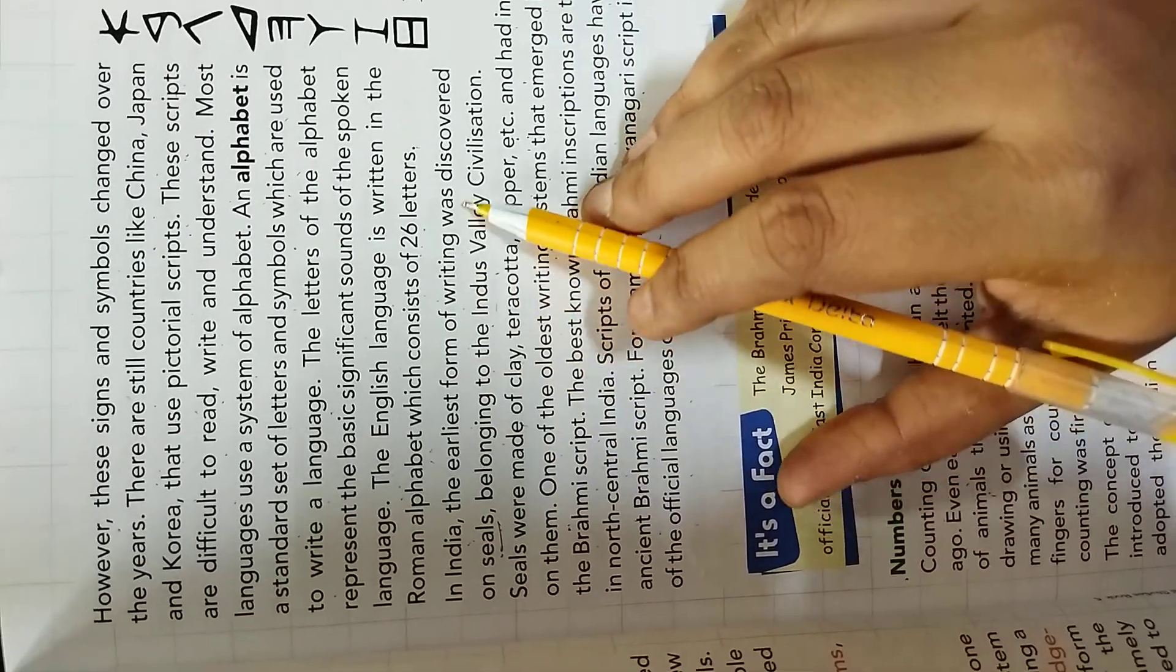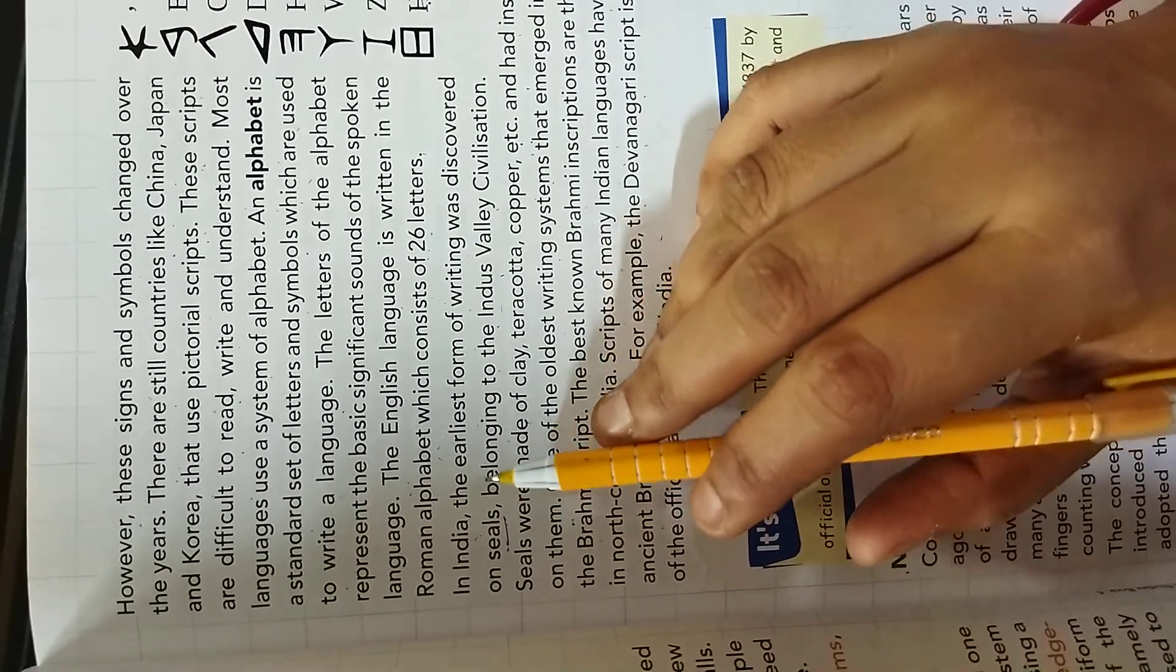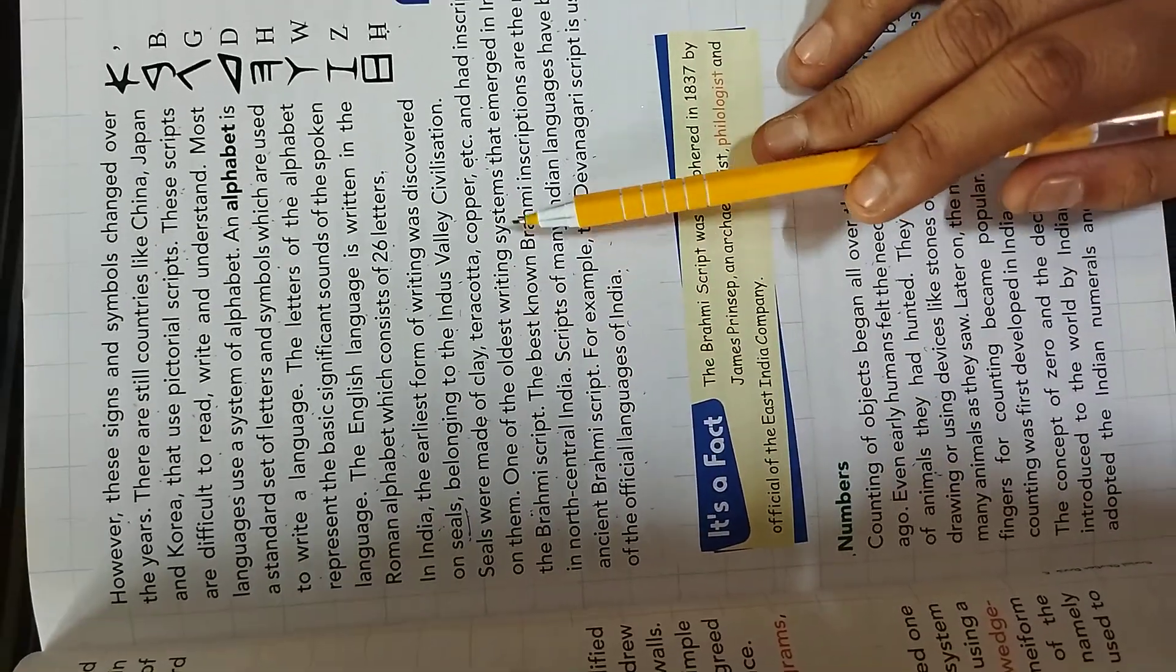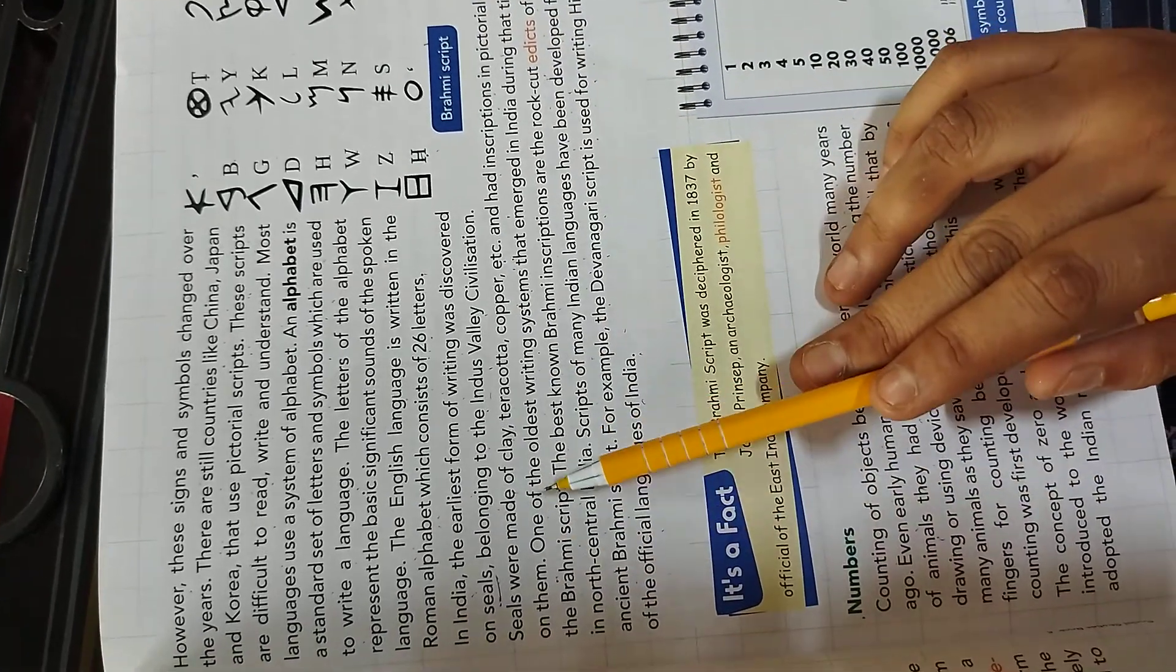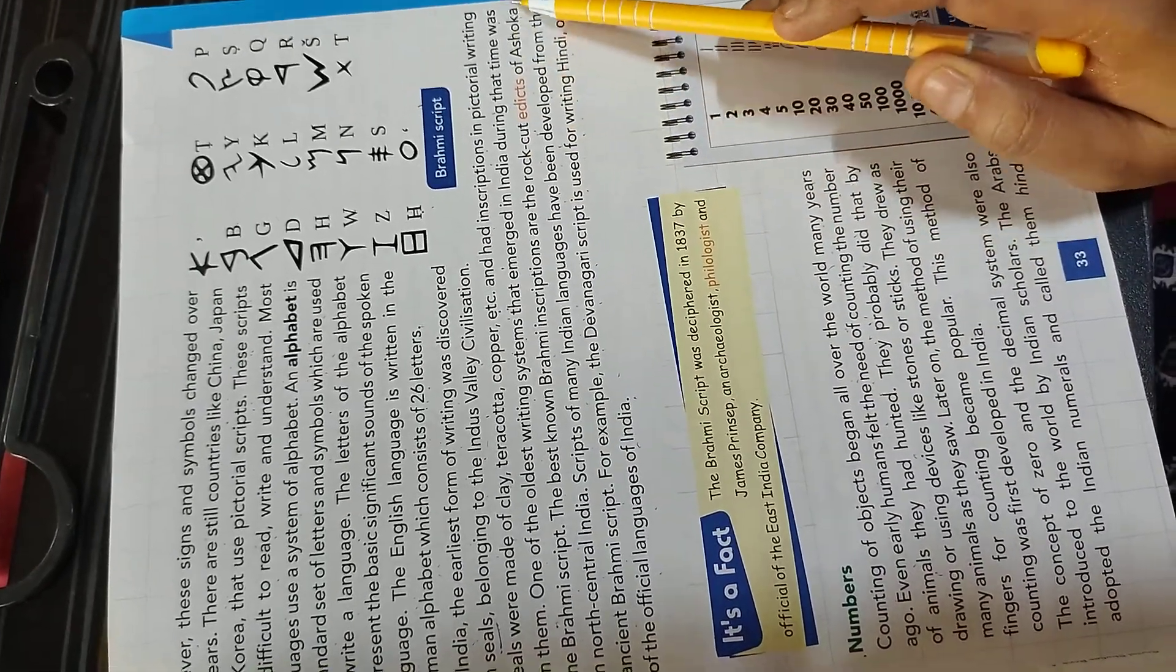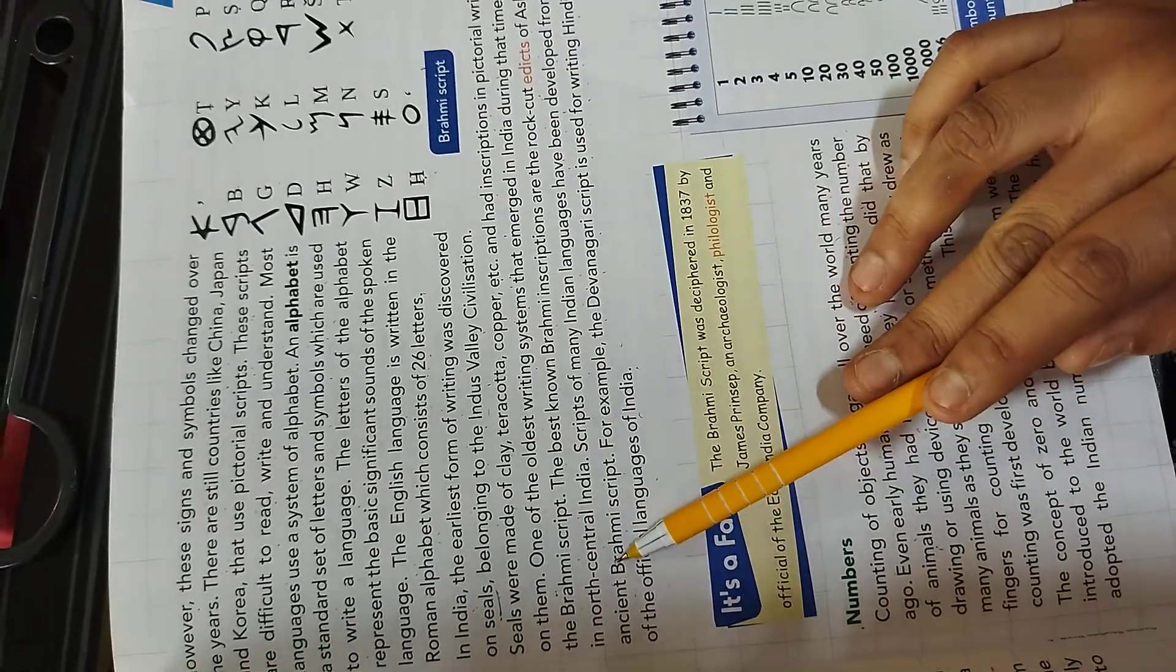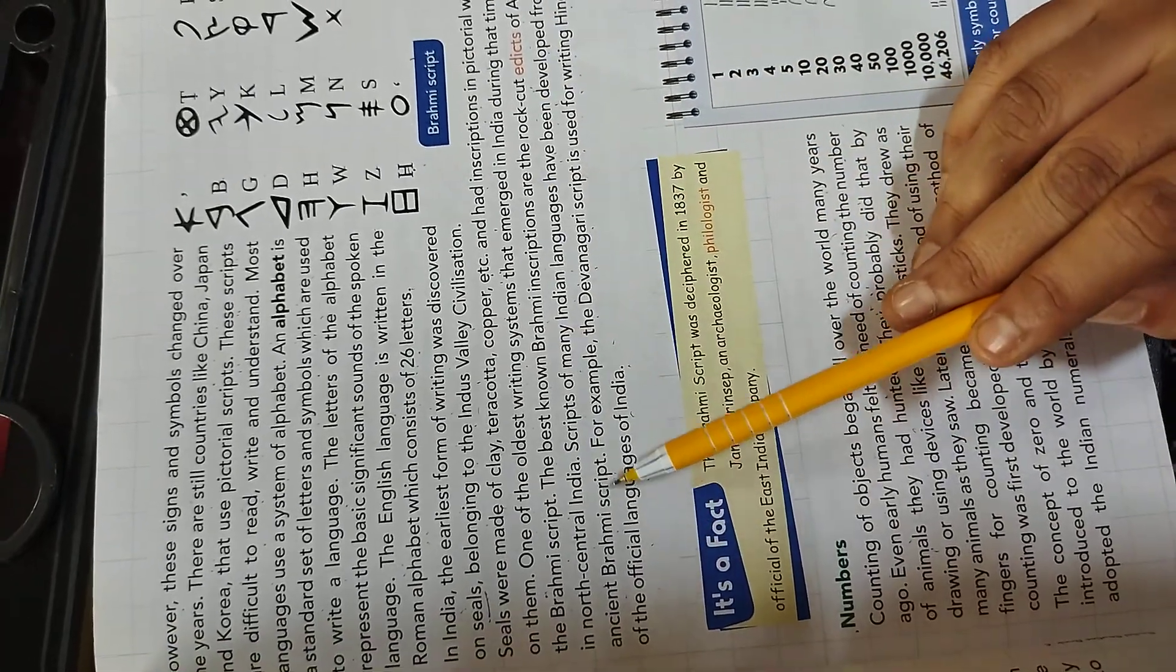In India, the earliest form of writing was discovered on seals belonging to the Indus Valley civilizations. Seals were made of clay, terracotta, copper, etc. and had inscriptions in pictorial writing on them. One of the oldest writing system that emerged in India during that time was the Brahmi script.